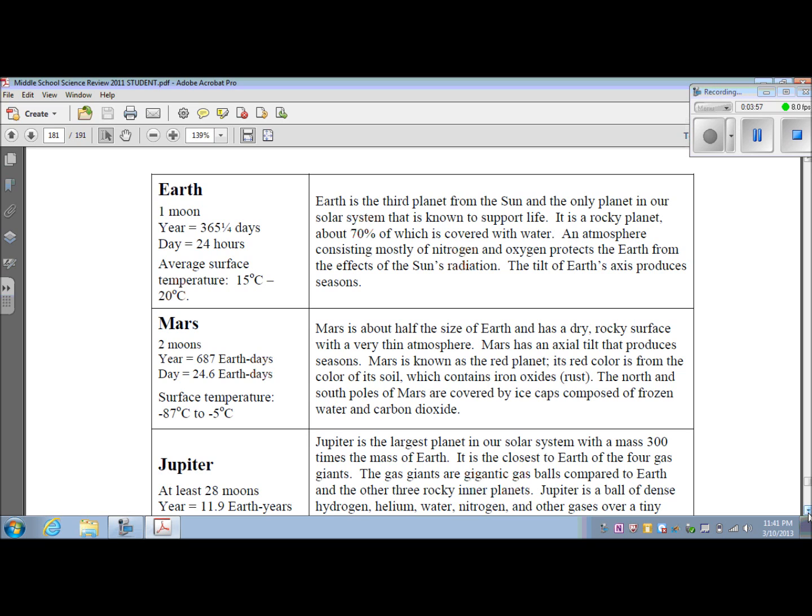The next planet is Mars. It has two moons. Its year is 687 Earth days. The day is 24.6 Earth hours. Its surface temperature is between negative 87 degrees Celsius to negative 5 degrees Celsius. Mars is about half the size of Earth and has a dry rocky surface with a very thin atmosphere. Mars has an axial tilt that produces seasons. Mars is known as the red planet. Its red color is from the color of its soil, which contains iron oxides such as rust. The north and south poles of Mars are covered by ice caps composed of frozen water and carbon dioxide.